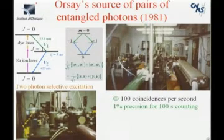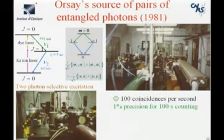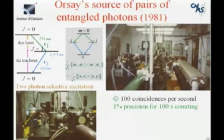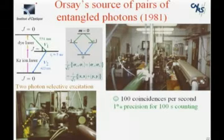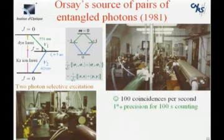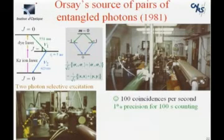With this, we obtained 100 true coincidences per second, while previous workers had a fraction of a coincidence per second. We gained many orders of magnitude, which means, for instance, with this rate of coincidence, you get 1% precision for only 100 seconds of counting.